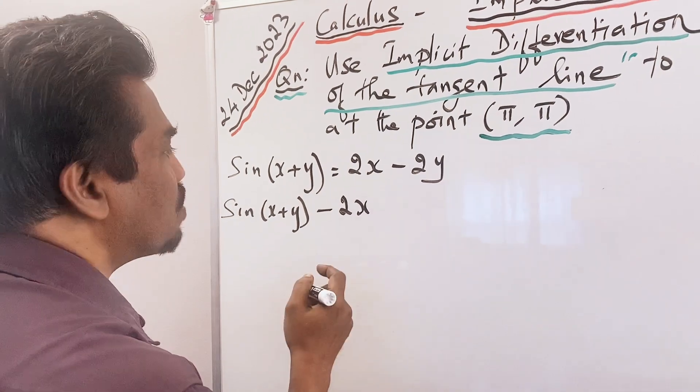To summarize: first I brought all terms to one side to make differentiation easier, giving sin(x + y) − 2x + 2y = 0. Then I applied implicit differentiation and obtained dy/dx = (2 − cos(x + y)) / (cos(x + y) + 2). Plugging in (π, π) gives cos(2π) = 1, so m = (2 − 1)/(1 + 2) = 1/3.